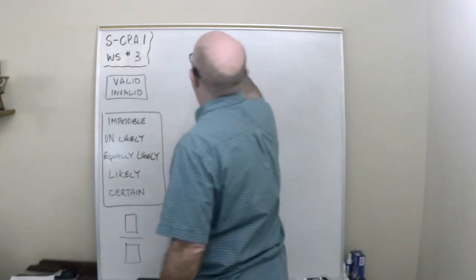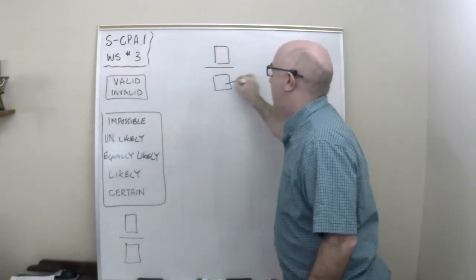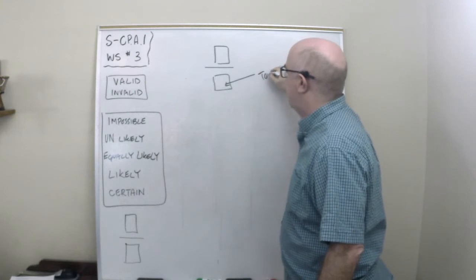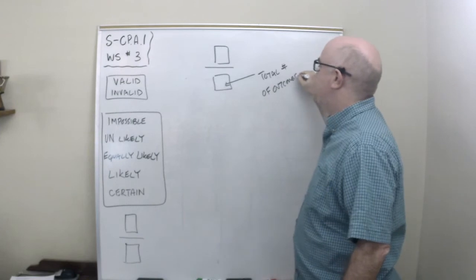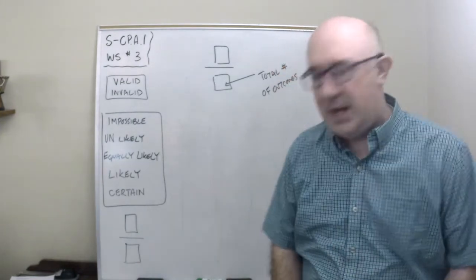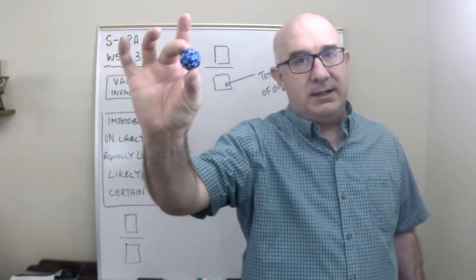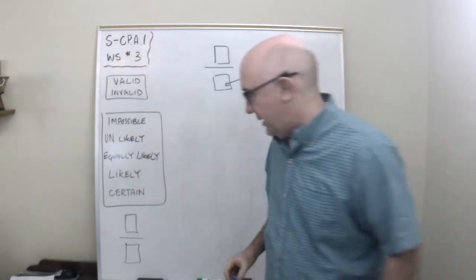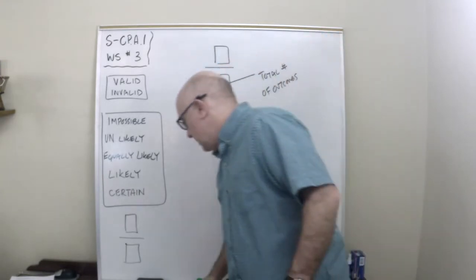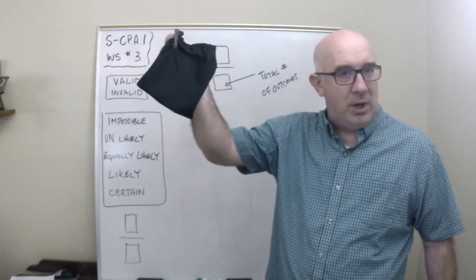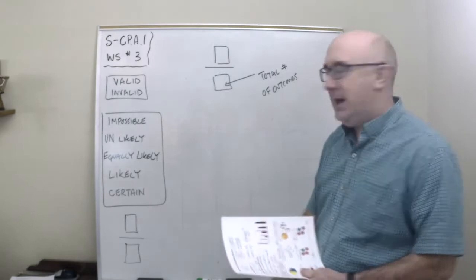Probability in its formal sense is often written in its fractional form. The denominator is the total number of outcomes — the total size of your sample space. If you're talking about a 30-sided dice, then 30 is the number down there. If you're talking about a deck of cards, you're talking about 52. A bag of marbles with 10 marbles — your number is 10. This represents the total number of things that could happen.